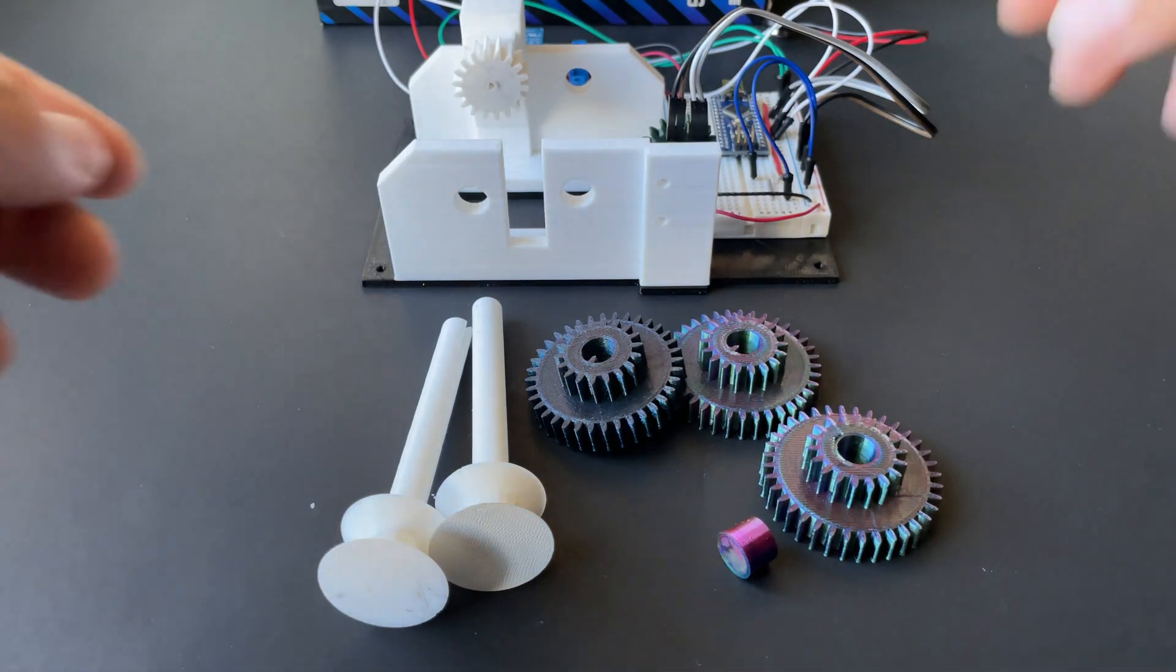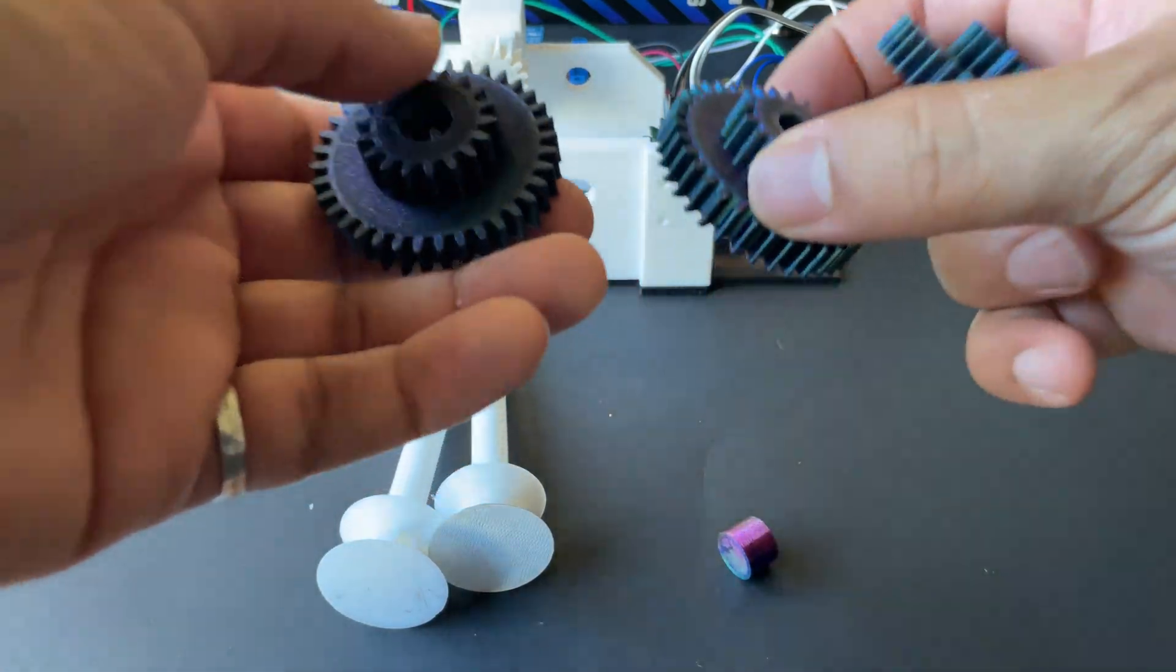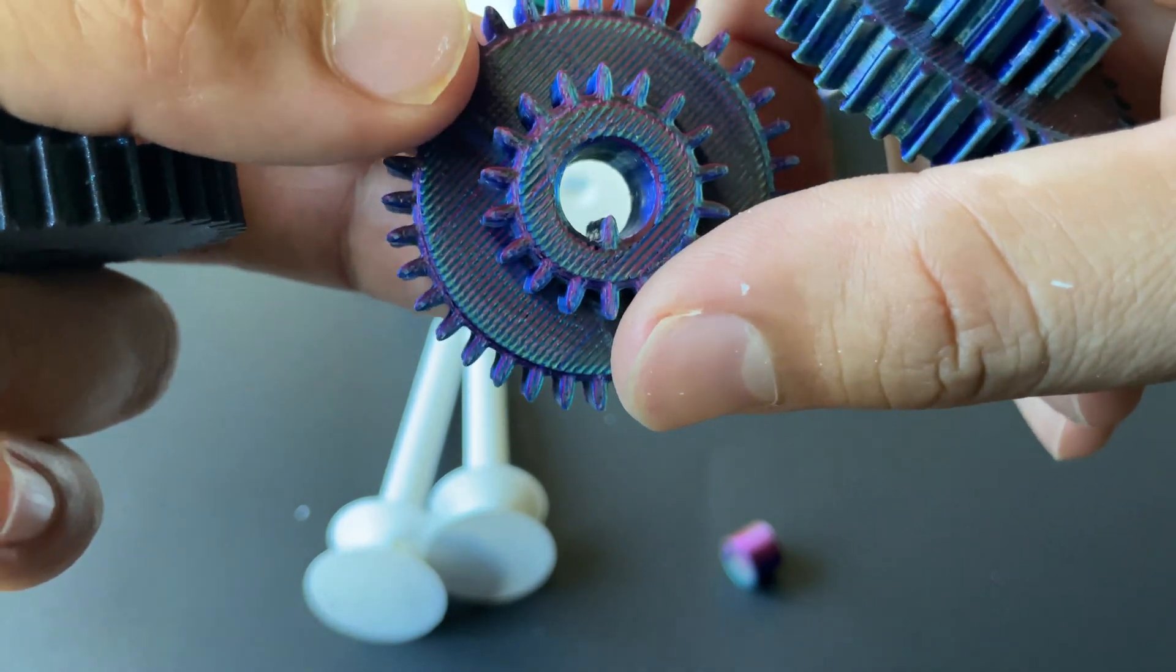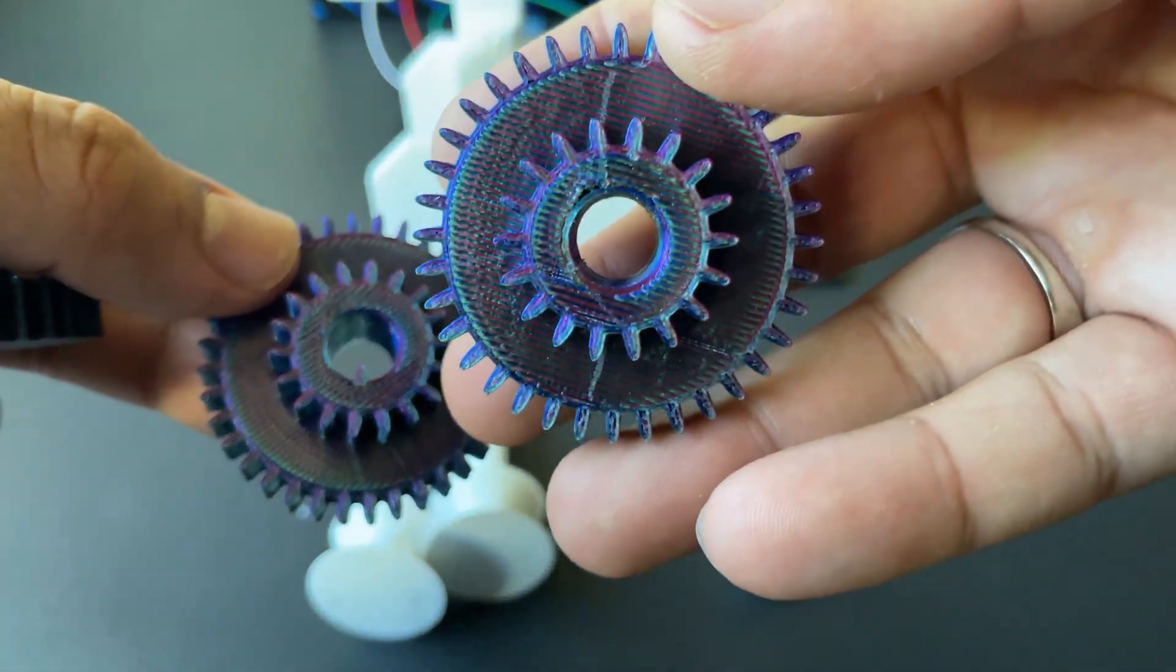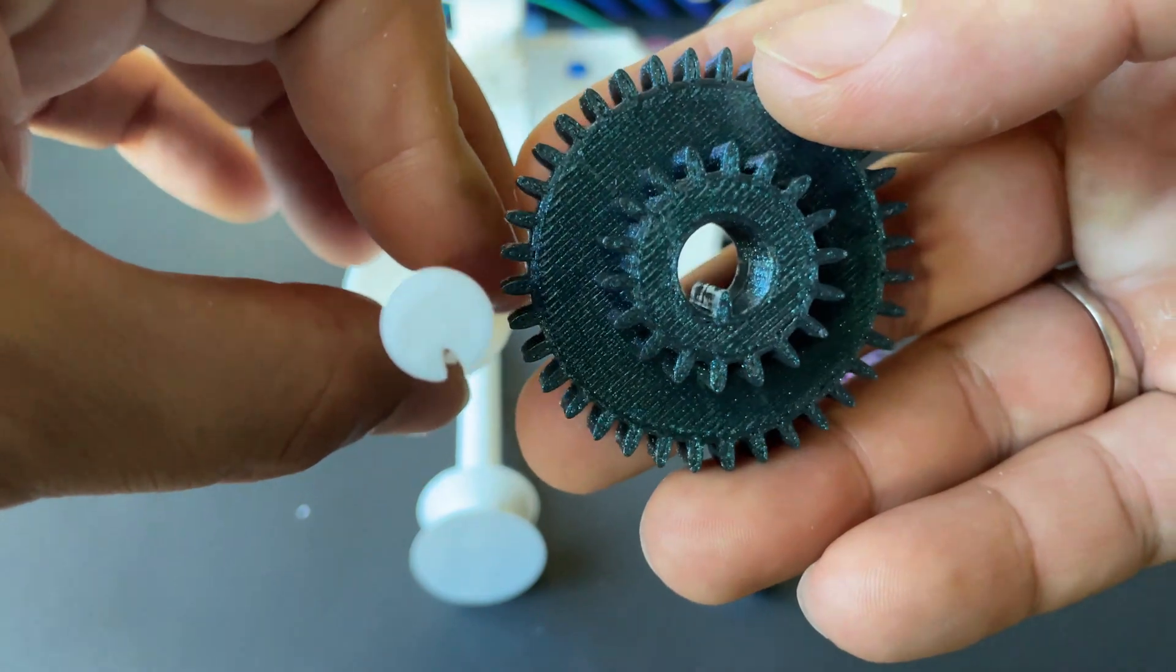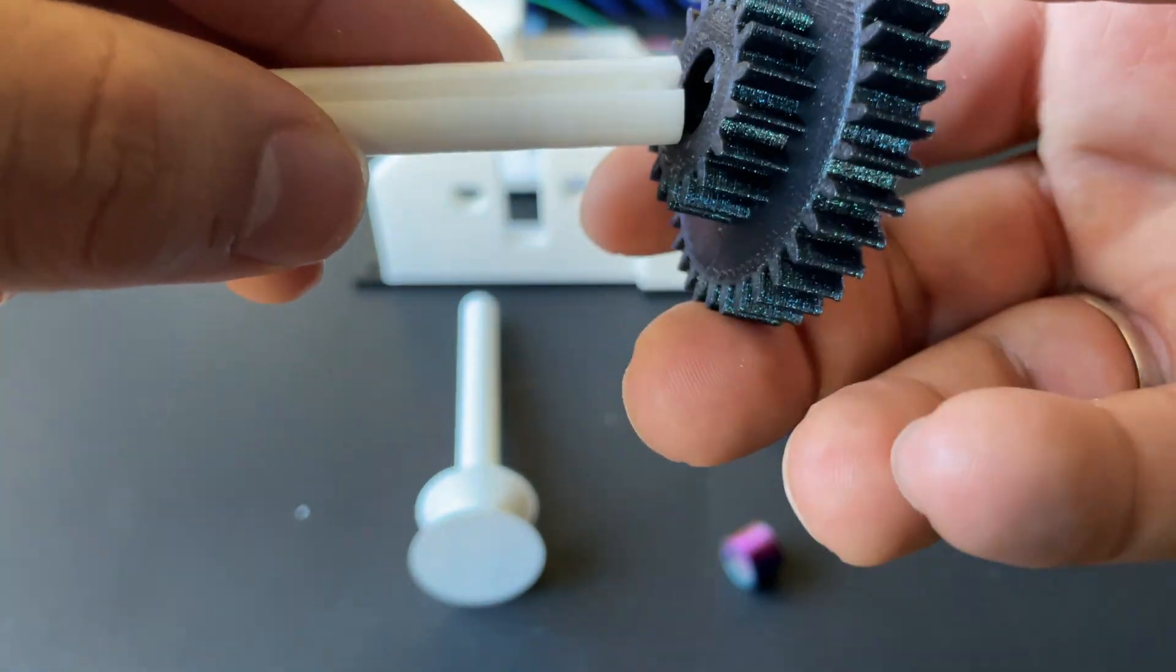Here I'm just showing you that I've made a little key on two of the gears, and one of them does not have one so that it's free to spin on the shaft. The key slides onto the shaft so that it locks and spins as one unit.